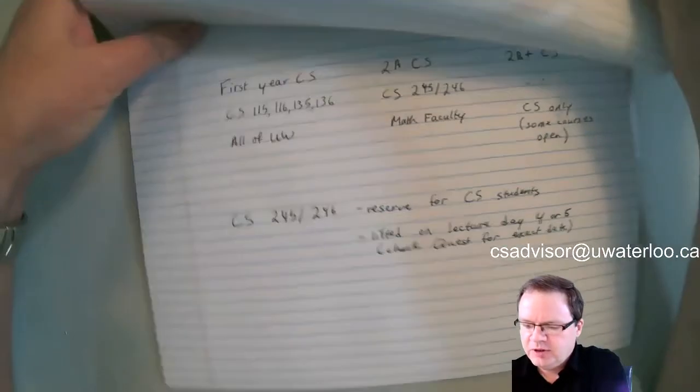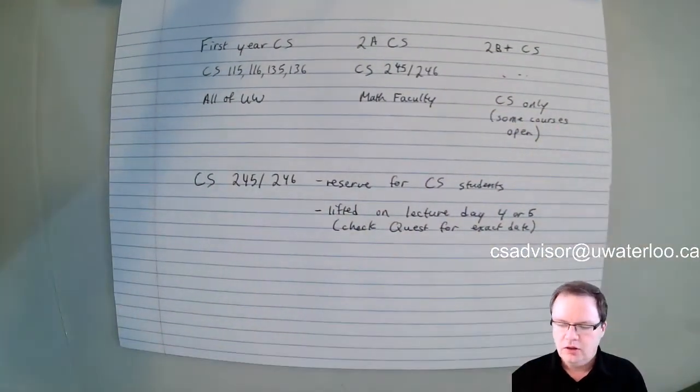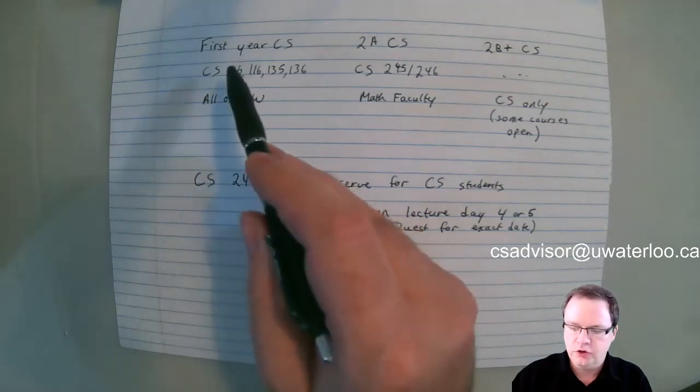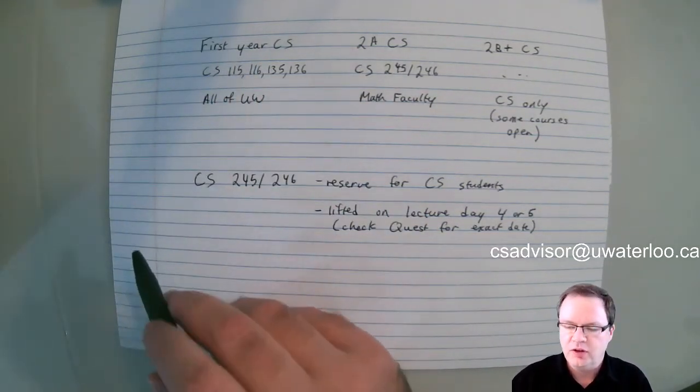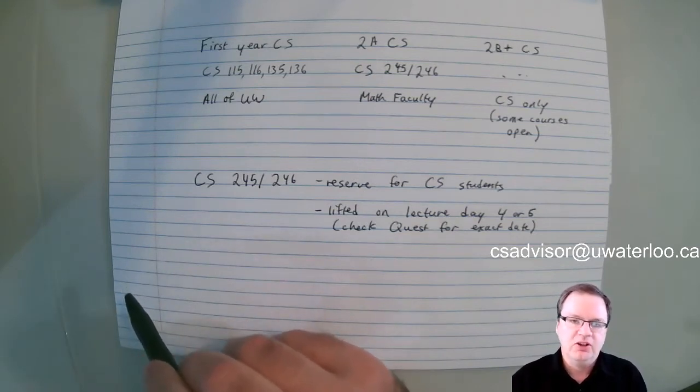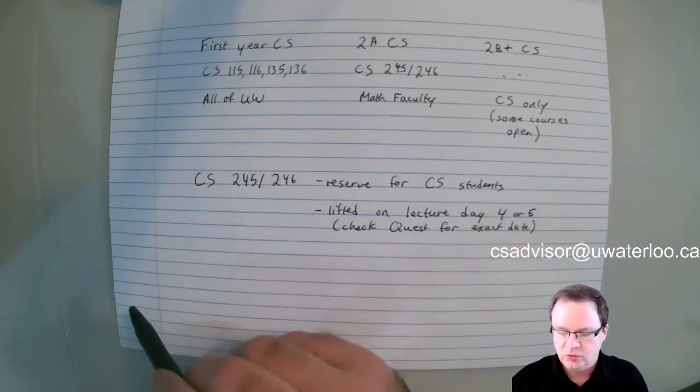First, a little bit of background. The way that courses in computer science are structured at Waterloo is that for the most part, first year courses in computer science—your CS115, 116, 135, 136—are open to all of UW. Any student can take these courses. It's possible you may have an anti-requisite to them, but aside from that, any student can take these courses.